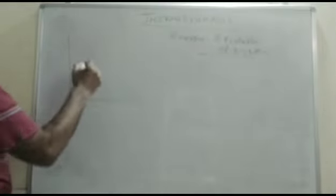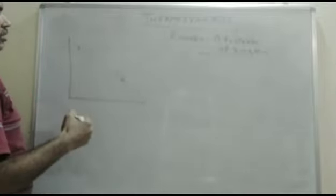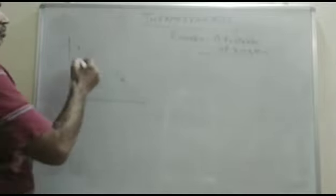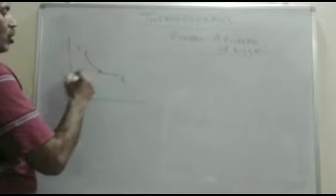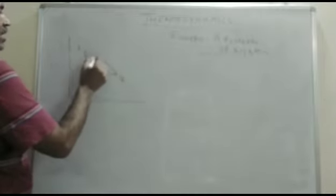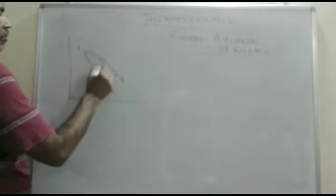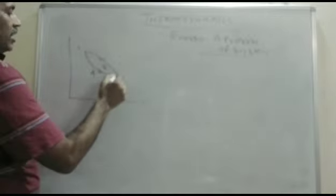First of all, consider three processes. There is a state 1 and there is a state 2. From state 1 to state 2, there is process A. Similarly, from state 2 to state 1, there is another process B, and from 2 to 1, the general process C.